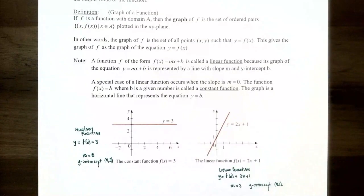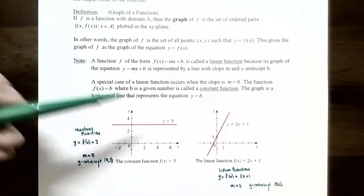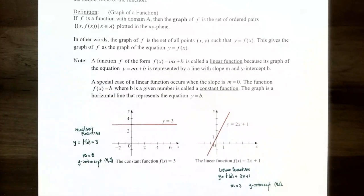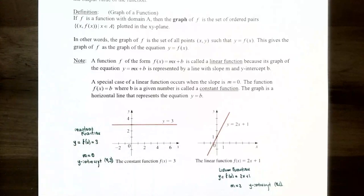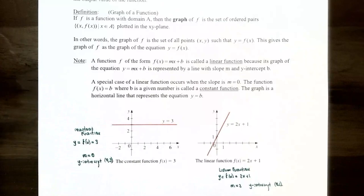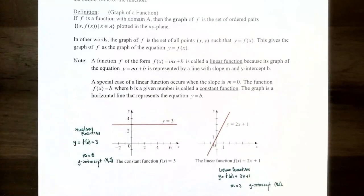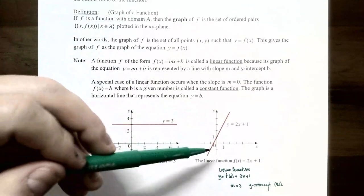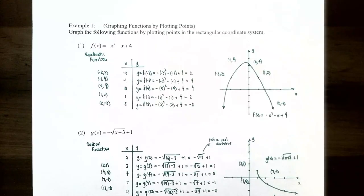The graph on the left is a constant function y = 3, or f(x) = 3. The horizontal line crosses the y-axis at the y-intercept (0, 3) and has a slope of zero. The graph on the right is a linear function y = 2x + 1, with a slope of 2. The graph crosses the y-axis at 1, which is the y-intercept.